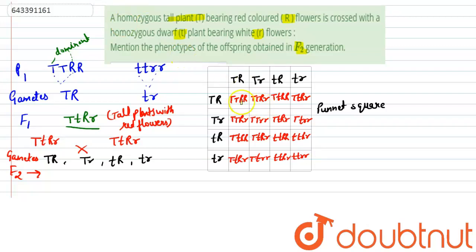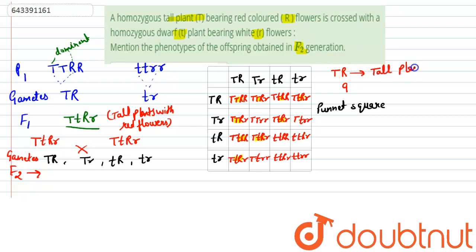We can observe that some offspring have both homozygous dominant forms, and in others there is one capital T and one capital R. There are nine such progenies which have at least one capital T and one capital R. Such progenies will have the phenotype of tall plants with red flowers. We have highlighted these with yellow.